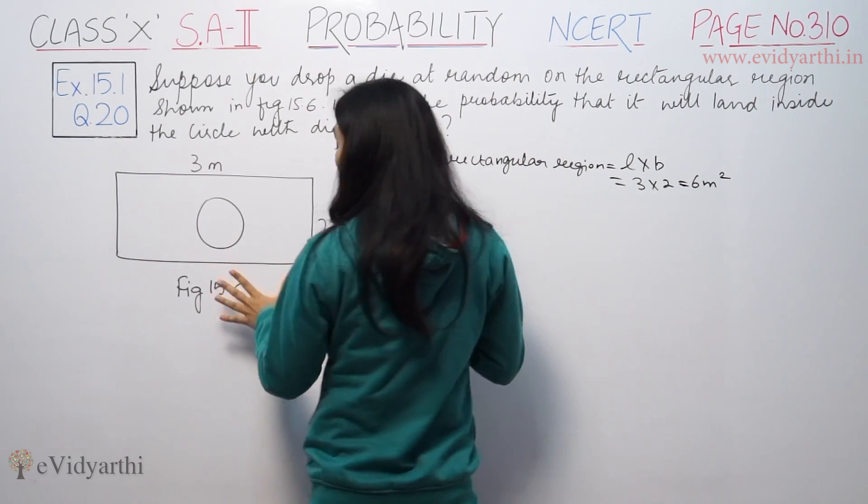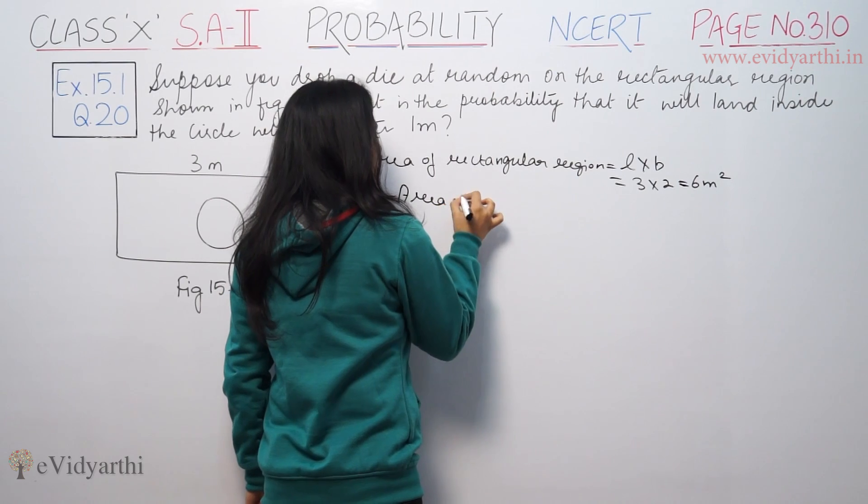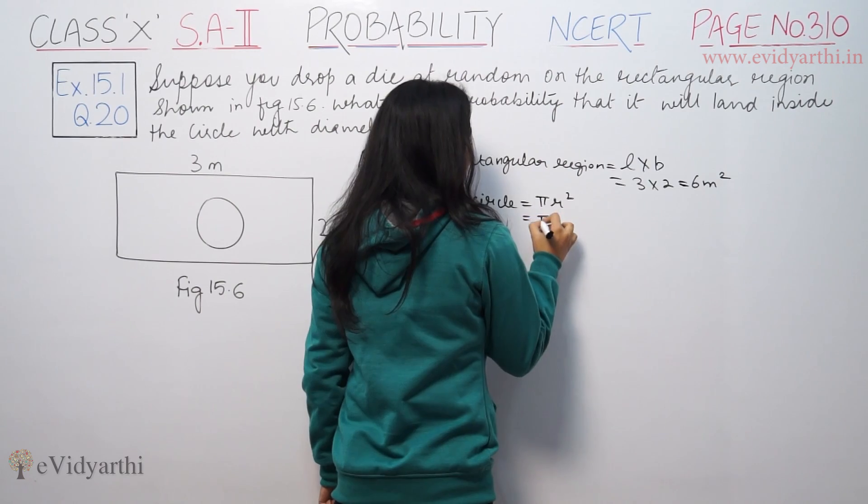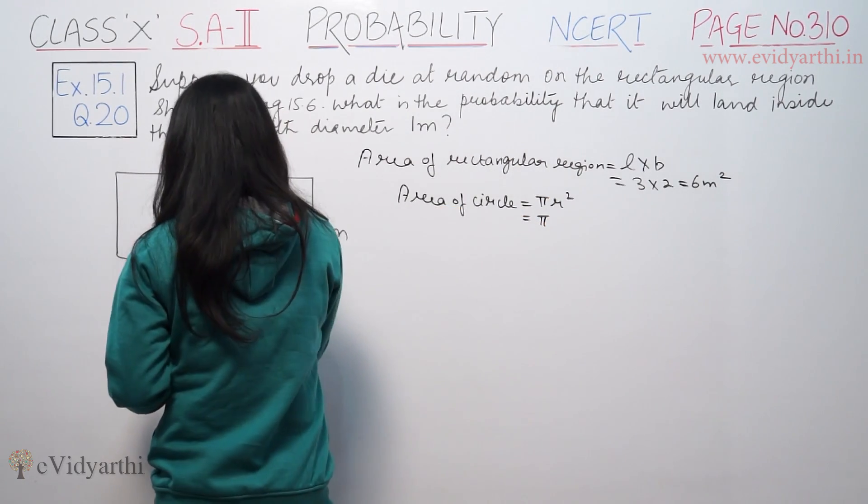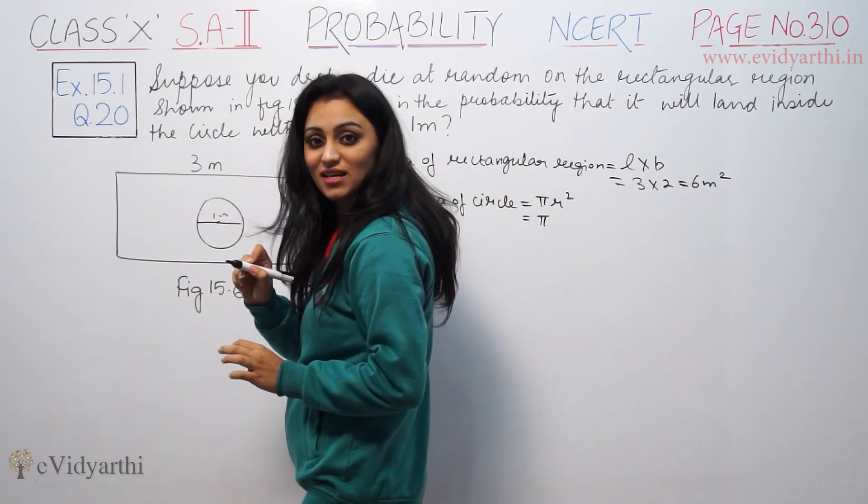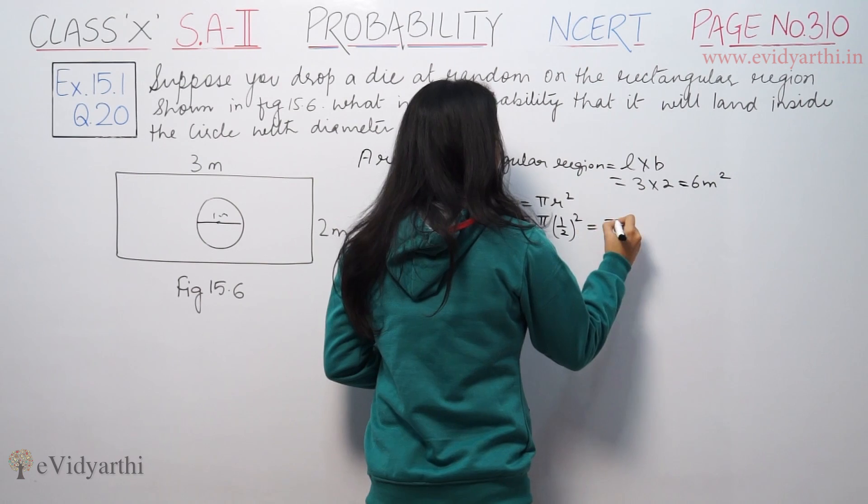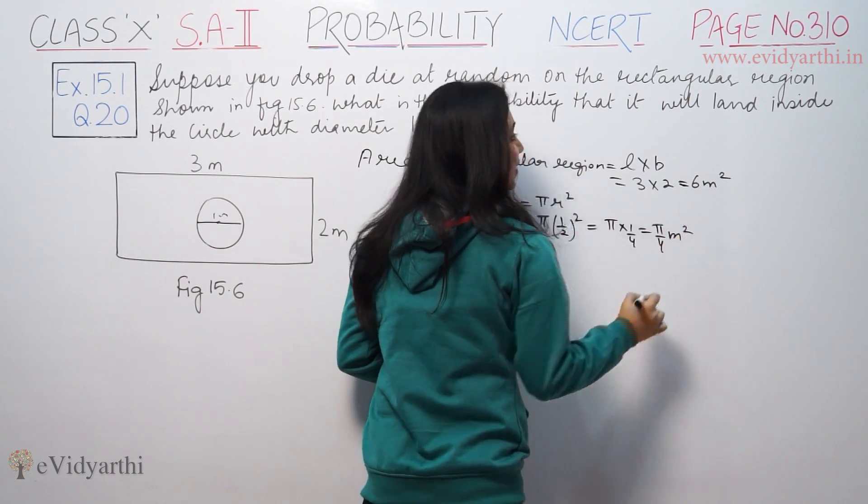So, area of circular region. Area of circle is equal to πr². The radius is half the diameter. Diameter is 1 meter, so radius is 1/2. We have π into 1/4. That means π/4 meter square.